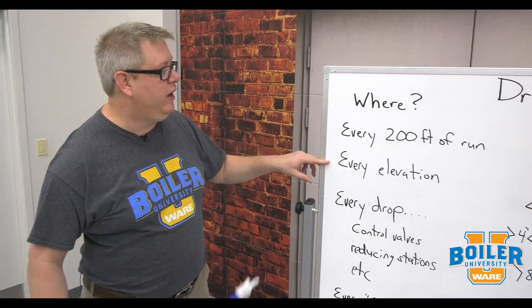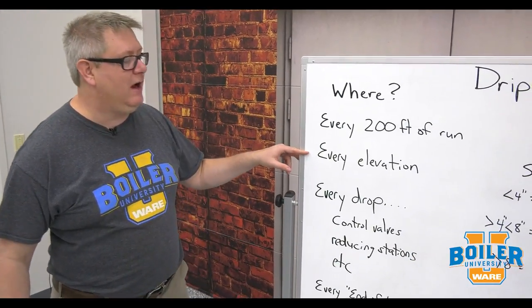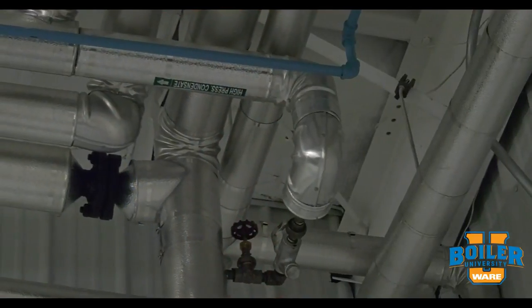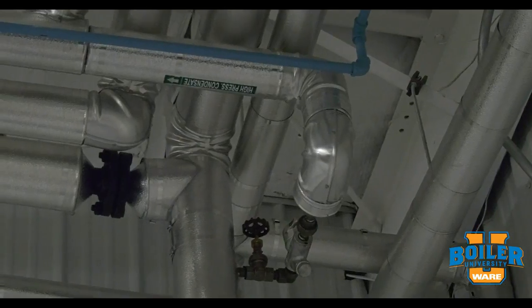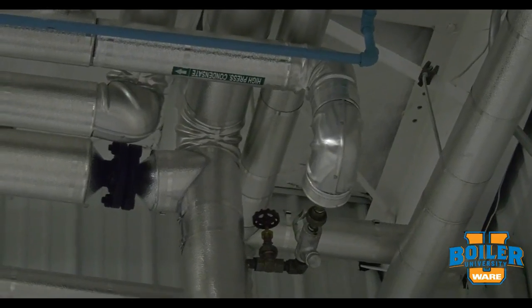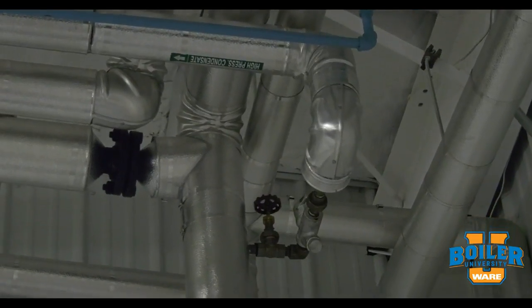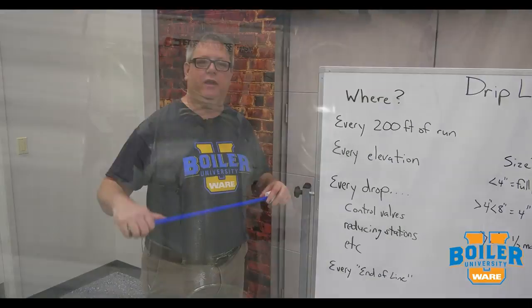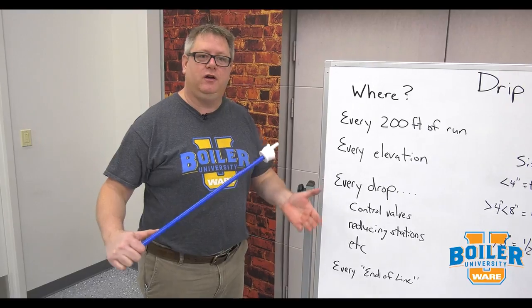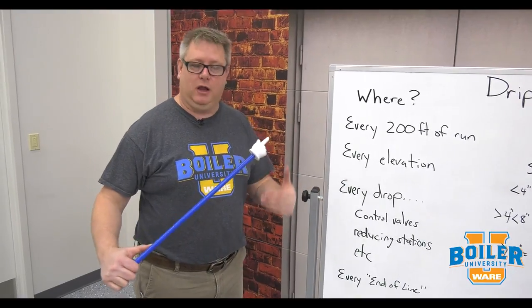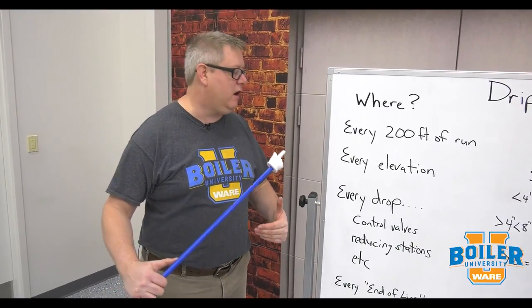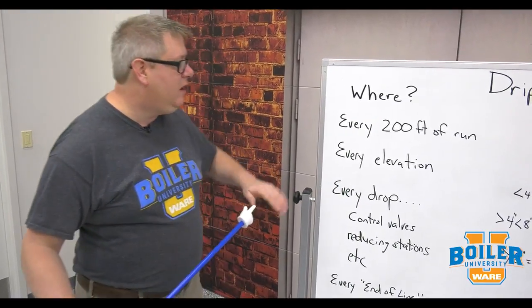We need to put a drip leg every time the steam line elevates, because condensate doesn't want to go up with the steam. By putting a drip leg there to capture it, it's a great point to collect and clear that condensate.